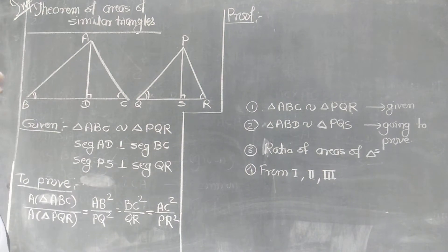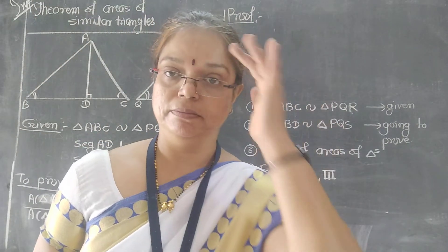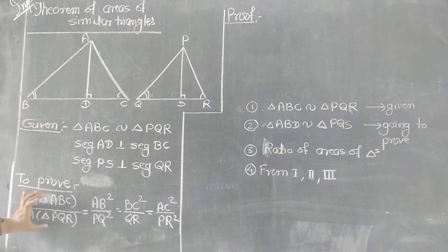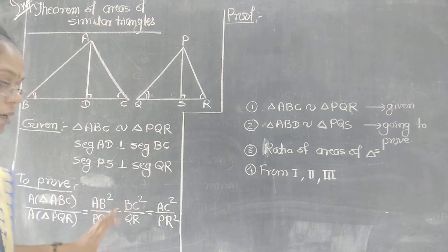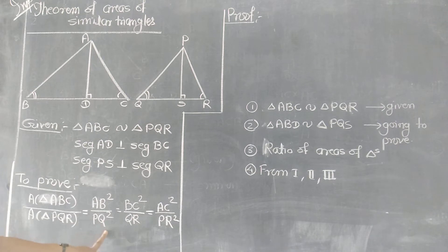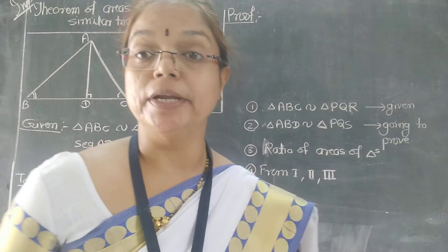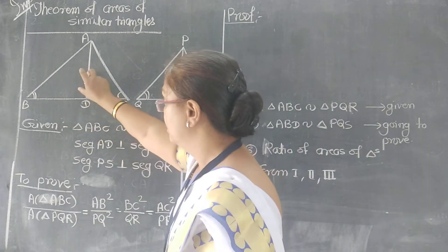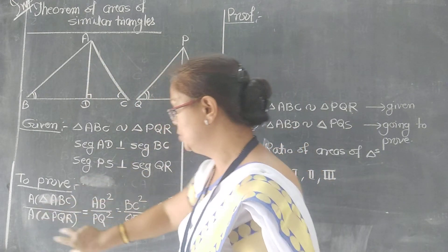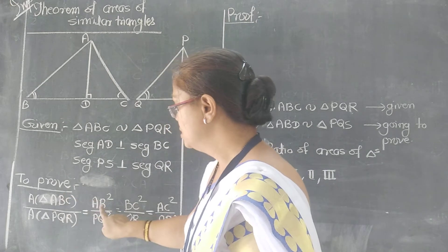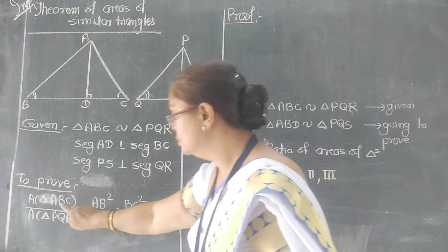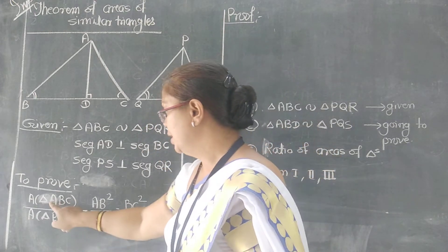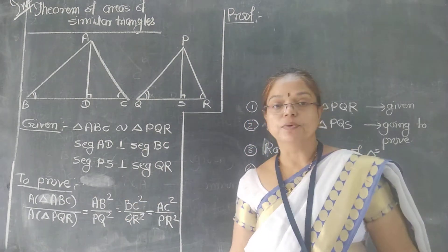Now, what is given? If two triangles are similar, then the ratio of the areas of those similar triangles is equal to the ratio of the squares of their corresponding sides. That is: area ratio = AB²/PQ² = BC²/QR² = AC²/PR². This is the portion we are going to prove.